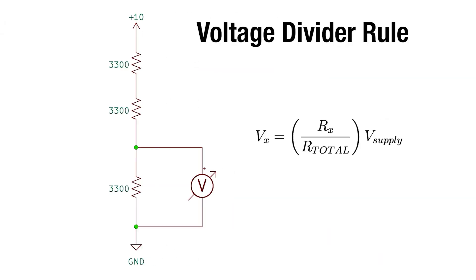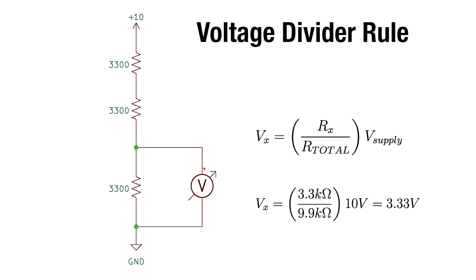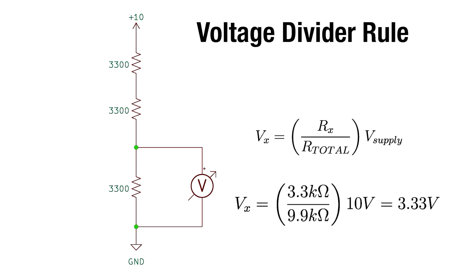If we have a bunch of resistors in series, we can figure out the voltage drop across a single resistor using the voltage divider rule. The voltage Vx is equal to the resistor we're interested in, Rx, divided by the total resistance, multiplied by the supply voltage. Here's a series circuit with a 10-volt supply and three equal resistances of 3.3k ohms each. Plugging into the formula gives 3.3k over 9.9k, multiplied by 10 volts, yielding 3.33 volts. Using KVL and the voltage divider rule, we can figure out the remaining resistors as well.